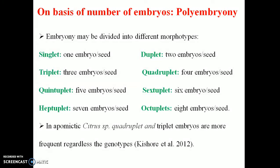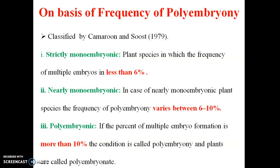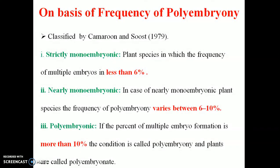Triplet and quadruplet forms are more frequent regardless of genotype. On the basis of frequency, there are different types: strictly monoembryonic plant species have less than 6% polyembryony; nearly polyembryonic species have about 6 to 10 percent; and truly polyembryonic species have multiple embryo formation at more than 10 percent.